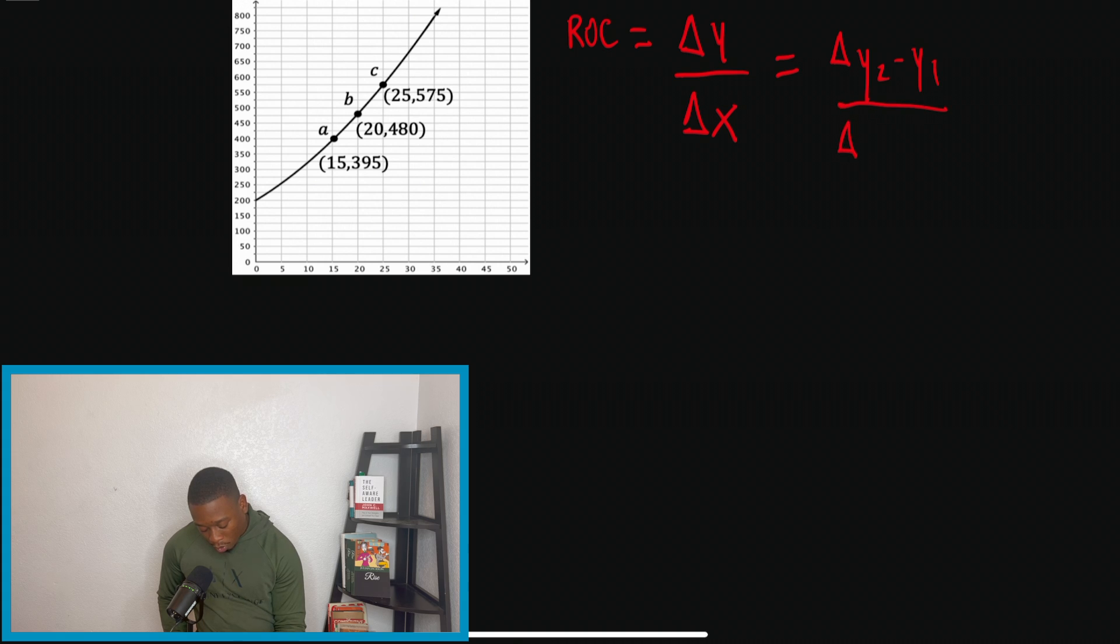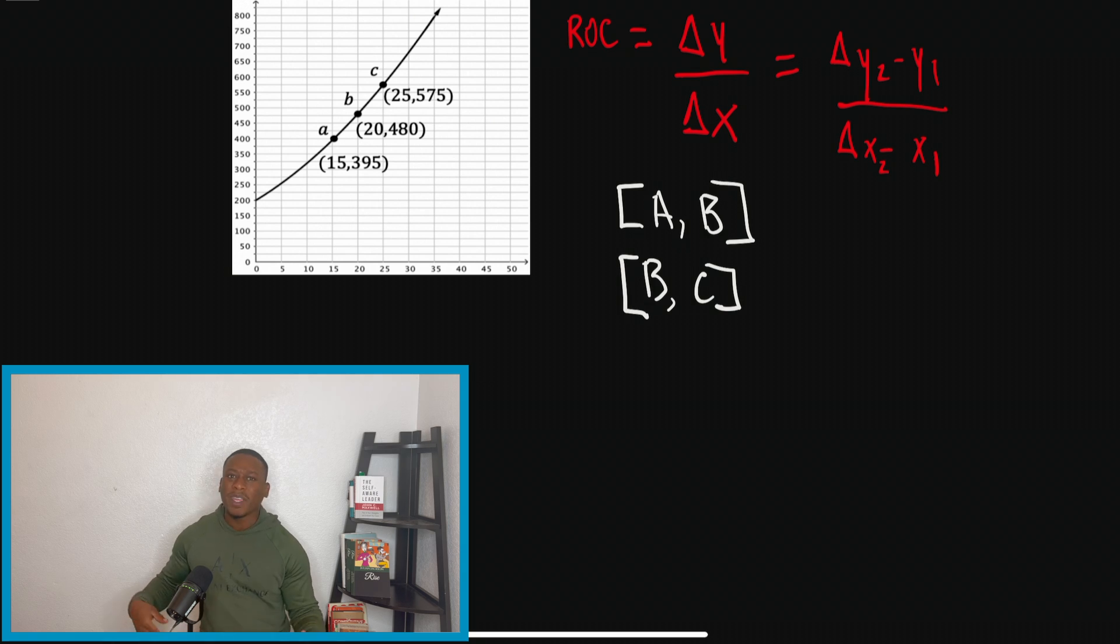So Y2 minus Y1 divided by X2 minus X1. So now we understand what formula we're using and they say to us, hey, we're going to find the average rate of change for the intervals A, B, and B, C. But what exactly do they mean when they say this, right? This is what it means. Your boy Peters, I got y'all.